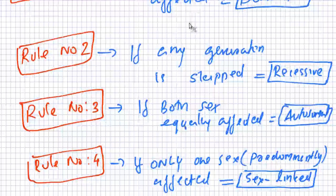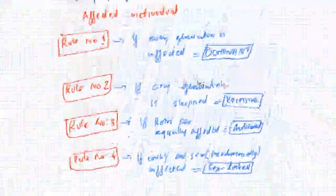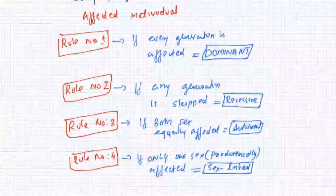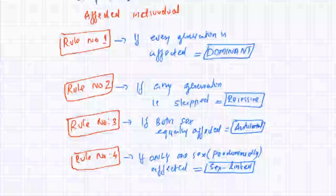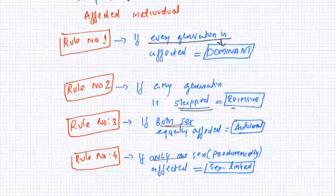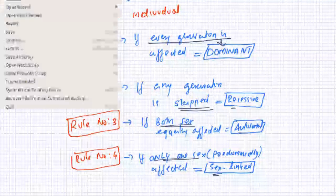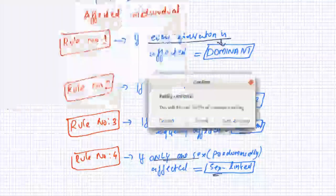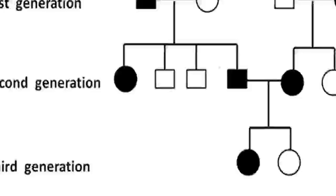So there are totally four rules: every generation affected means dominant; any generation skipped means recessive; both sexes affected means autosomal; one sex affected means sex-linked. We'll be doing some examples for you now.